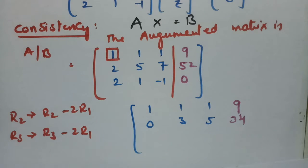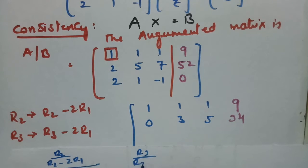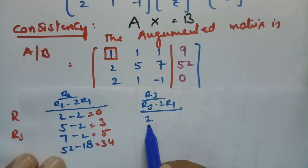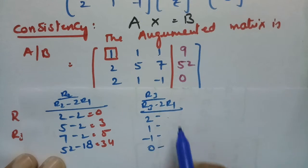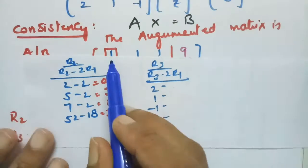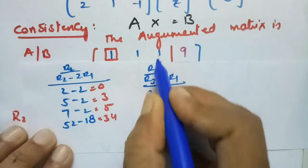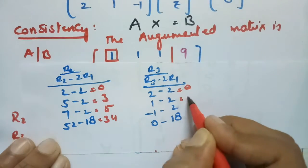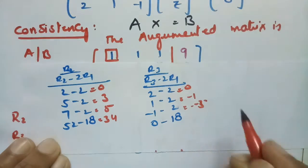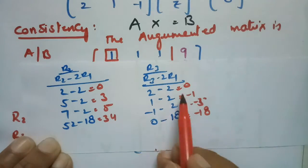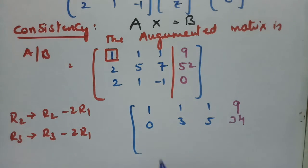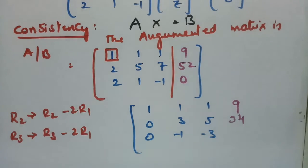So the R3 operation is R3 minus 2R1. R3 is 2 1 minus 1 | 0. We subtract 2 times R1: 2, 2, 2 | 18. The resulting values are 0, minus 1, minus 3, and minus 18. So R3 becomes 0 minus 1 minus 3 | minus 18.